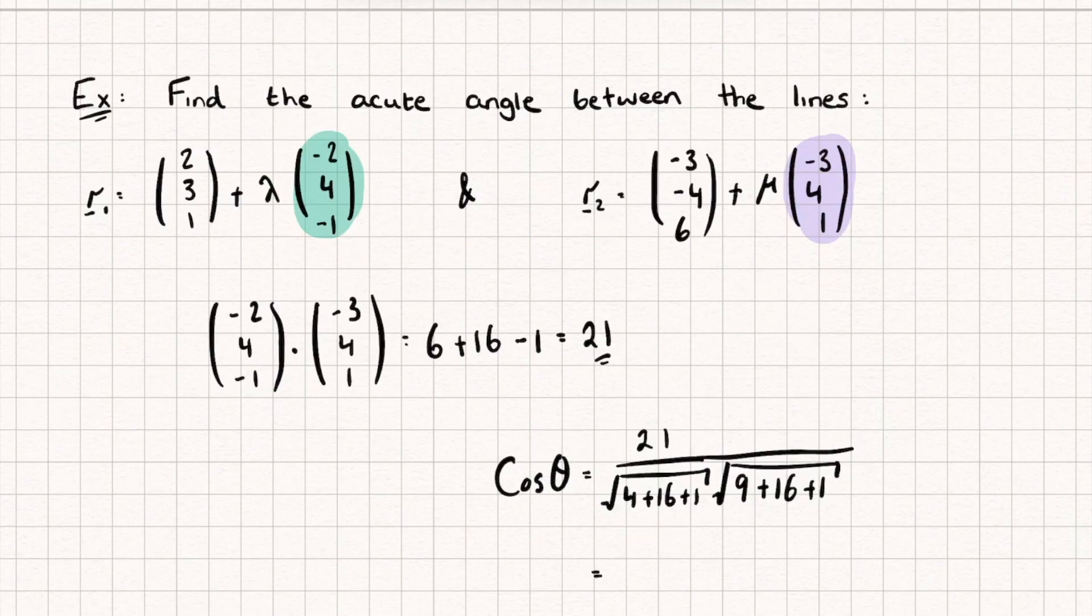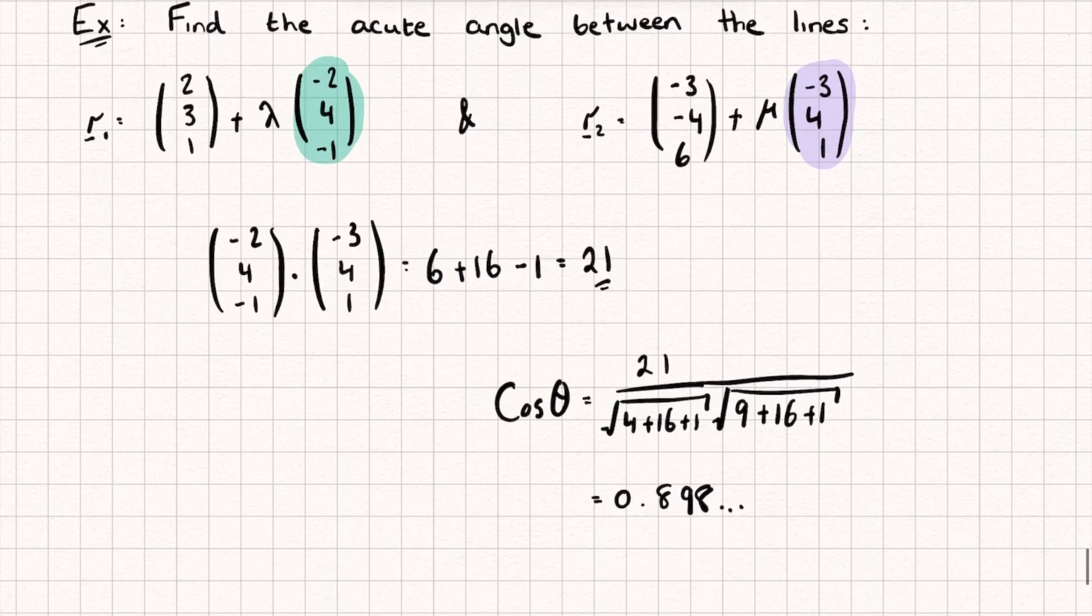And this is going to give me a result of 0.898. I'm going to leave it exact in my calculator, then calculate the inverse cosine. And I get that the angle theta, so the angle between these two vectors, is 26 degrees.